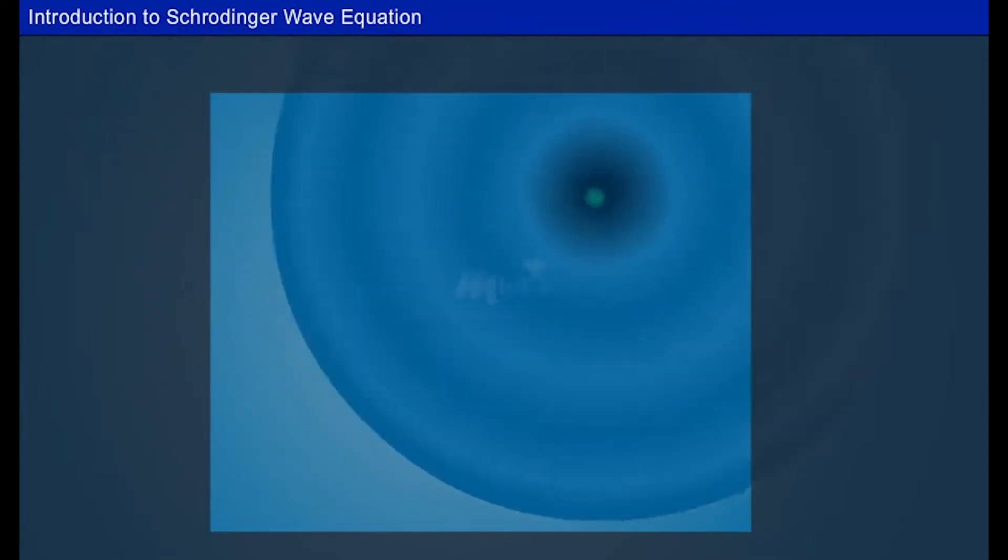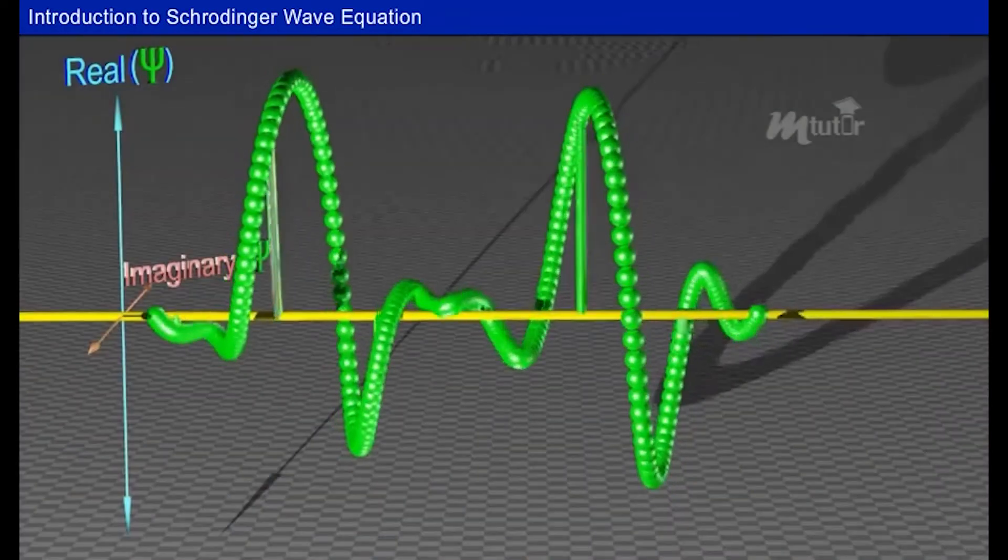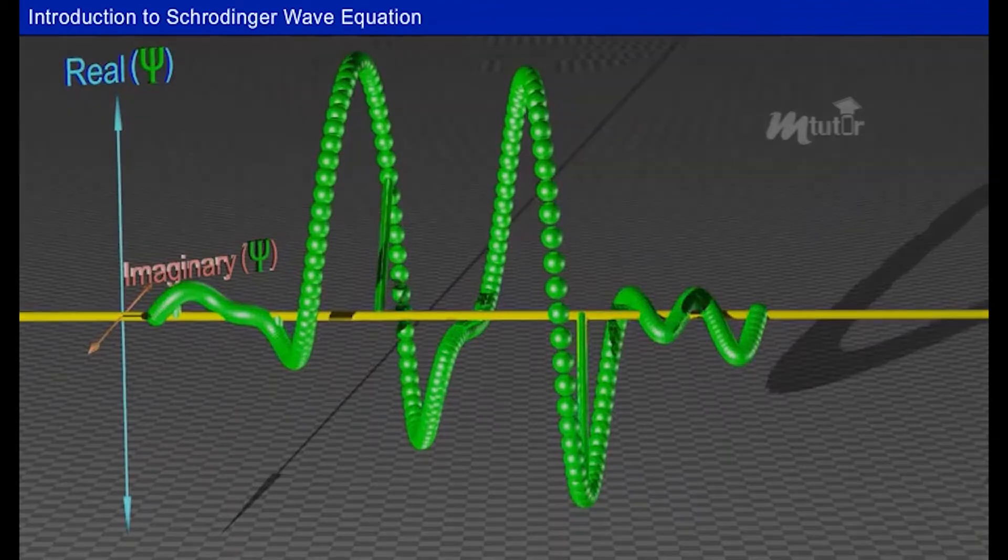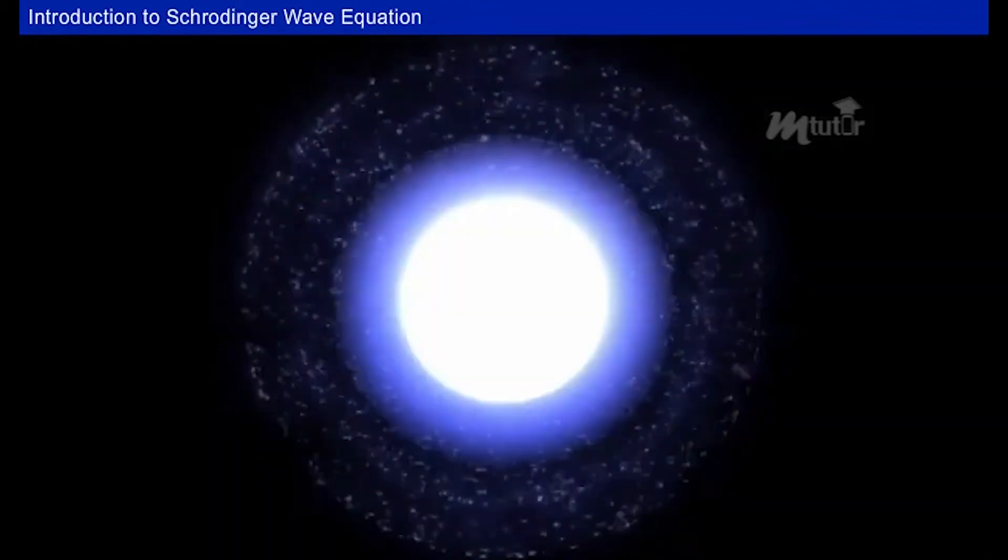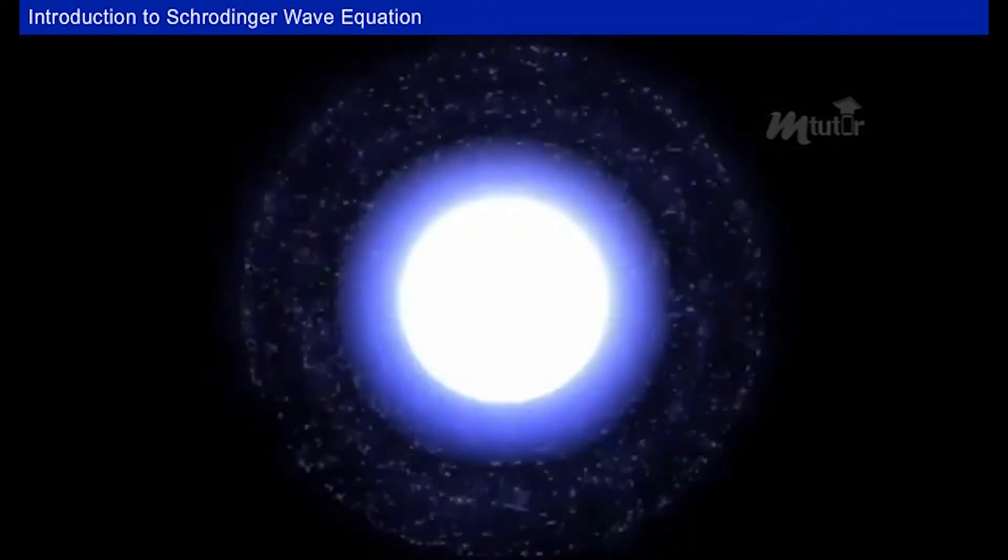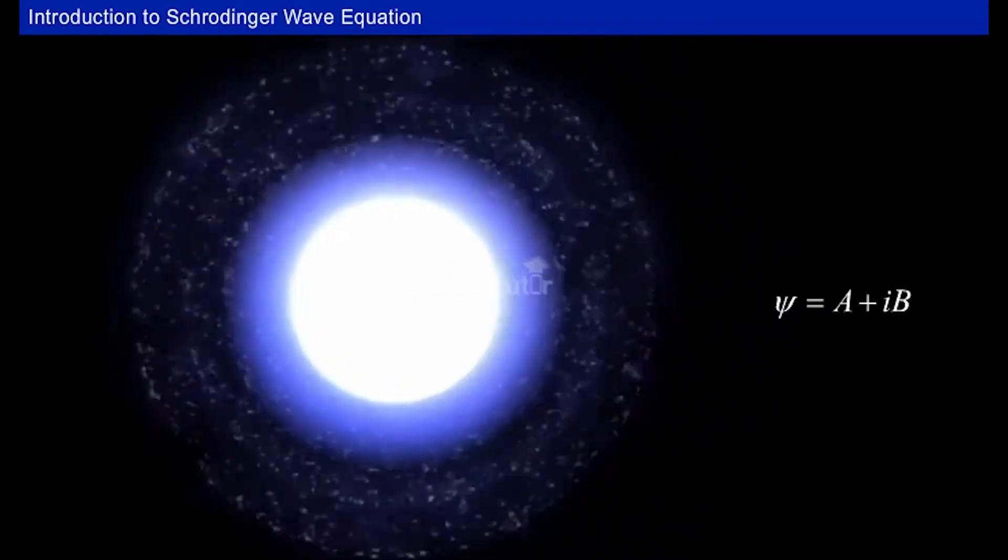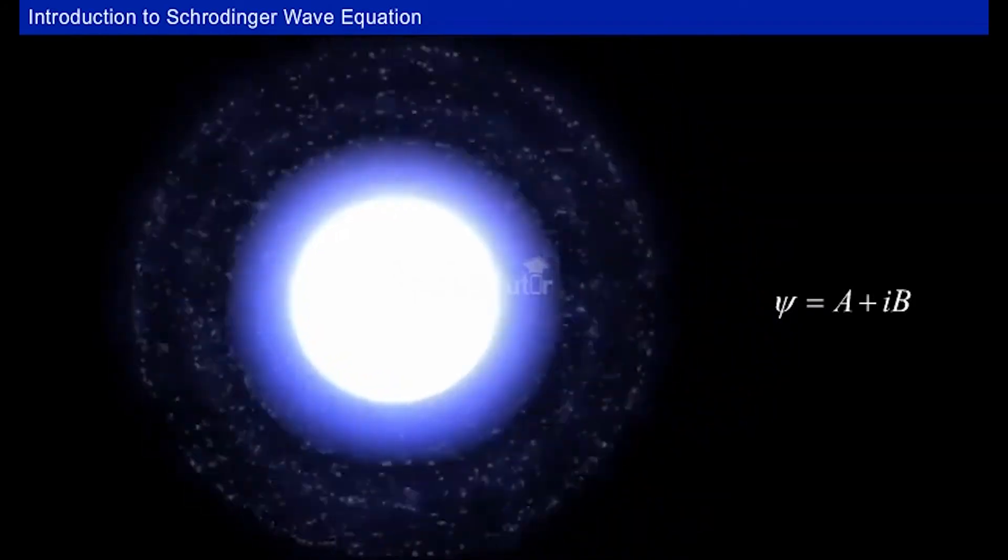Here, we use the Schrödinger Wave Equation. The probability of finding a particle within a corresponding area is by using a symbol psi. Wave functions are usually complex with both real and imaginary parts. We will review some basics with complex algebra used in Schrödinger equation. Psi is equal to a plus ib.